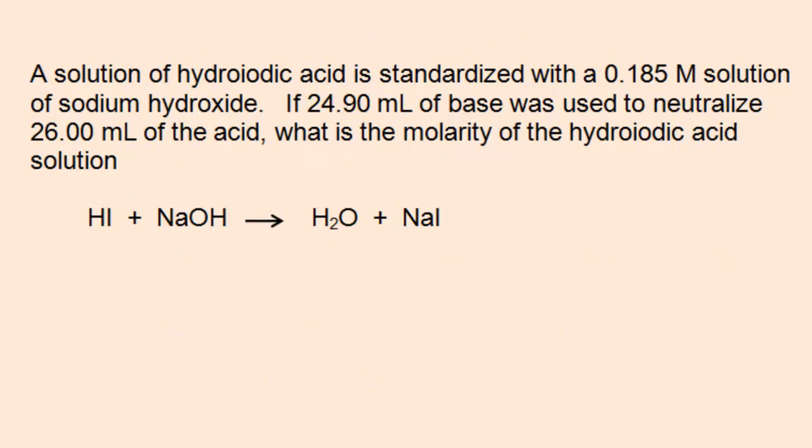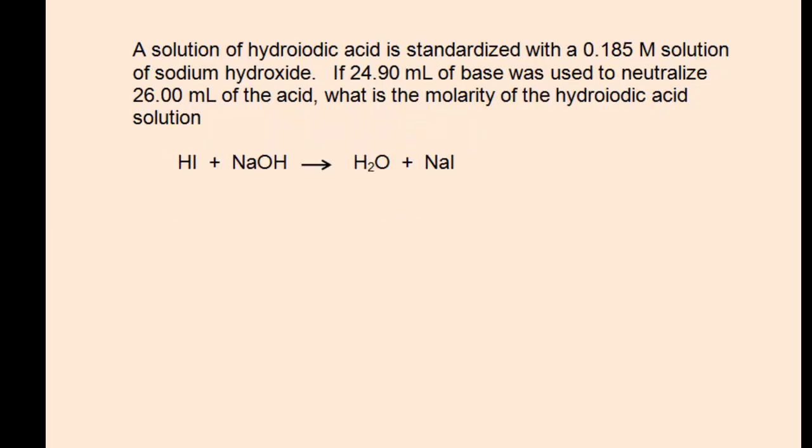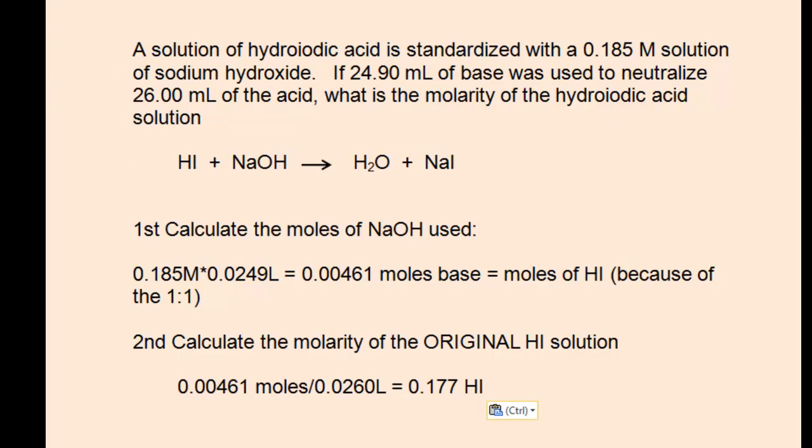Here's a slight variation on the previous problem. Rather than having equal amounts of acid and base in the standardization problem, here we have 26 mL of acid being standardized with 24.9 mL of base. What I would like for you to do is predict if the concentration of the acid will be greater than or less than 0.185 molar, knowing that there's a one-to-one ratio between the acid and the base. If you predicted less, you would be correct.